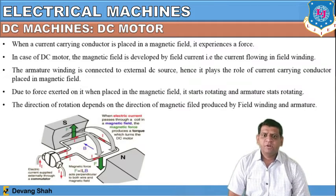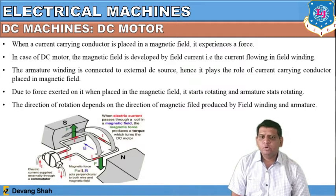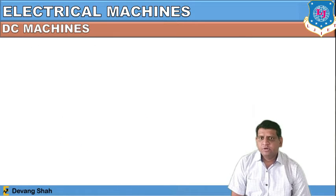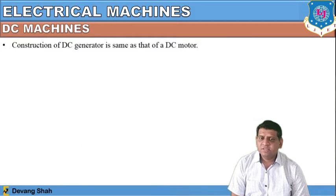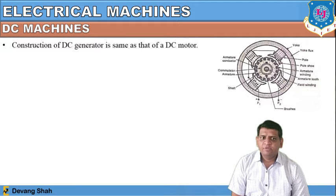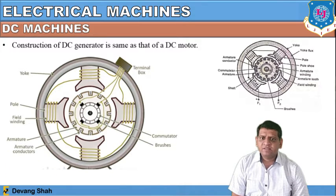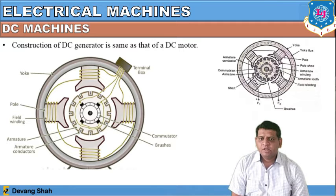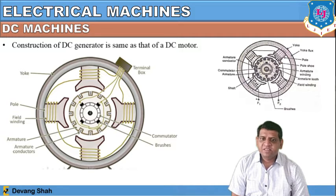The direction of rotation depends on the direction of the magnetic field produced by the field winding and armature. The construction of the DC generator is the same as the DC motor. From the front view of this DC machine, the middle part is defined as the armature in a slotted form. Around the armature there are poles, and over each pole we find the field winding. The outer part is defined as the yoke. This is the overall construction of the DC machine.